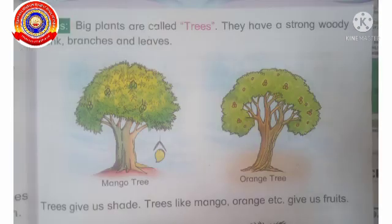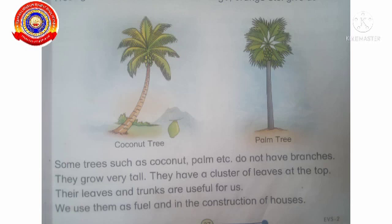Trees. Big plants are called trees. They have a strong woody trunk, branches and leaves. Trees give us shade. Trees like mango, orange, etc. give us fruits. Some trees such as coconut, palm, etc. do not have branches. They grow very tall and have a cluster of leaves at the top. Their leaves and trunks are useful for us. We use them as fuel and in the construction of houses.